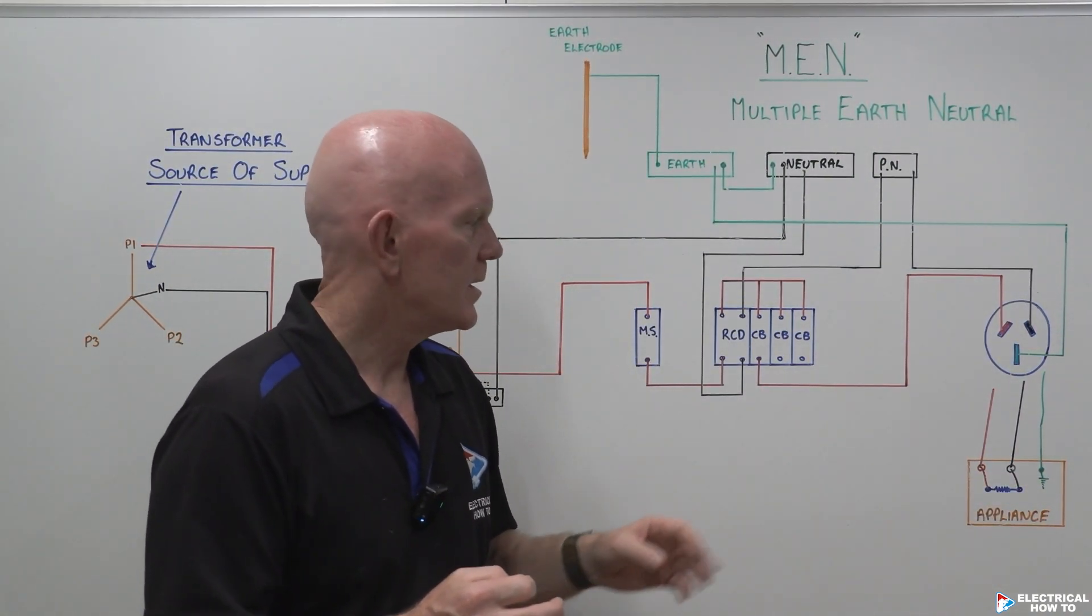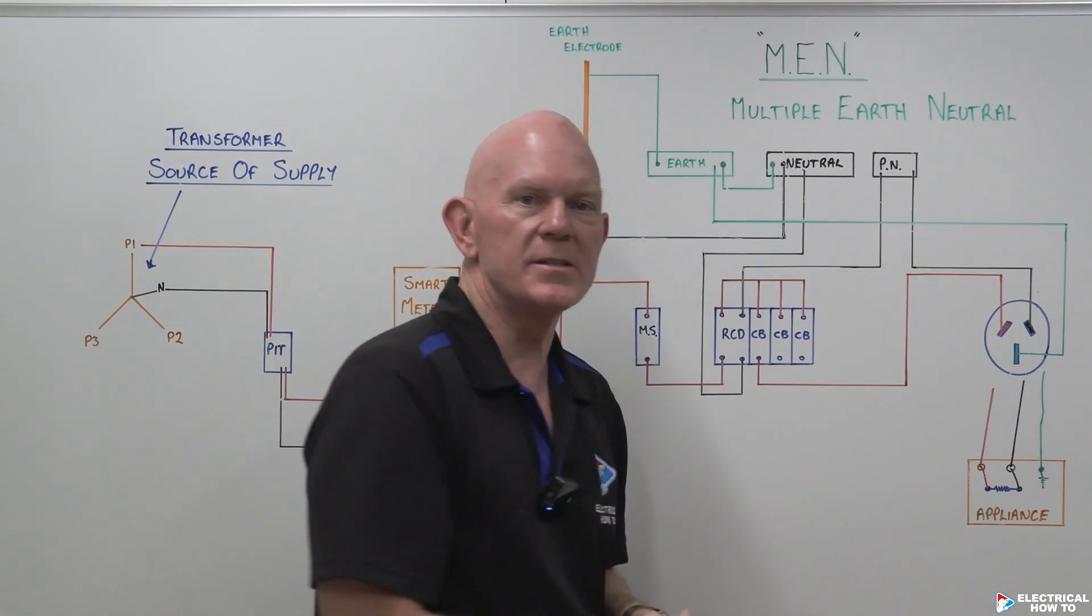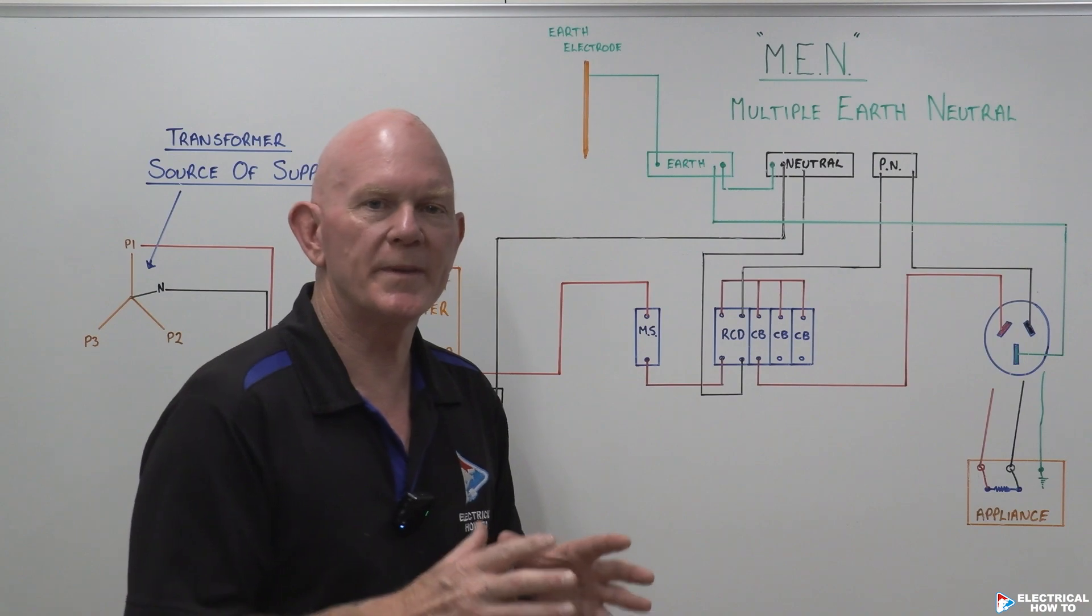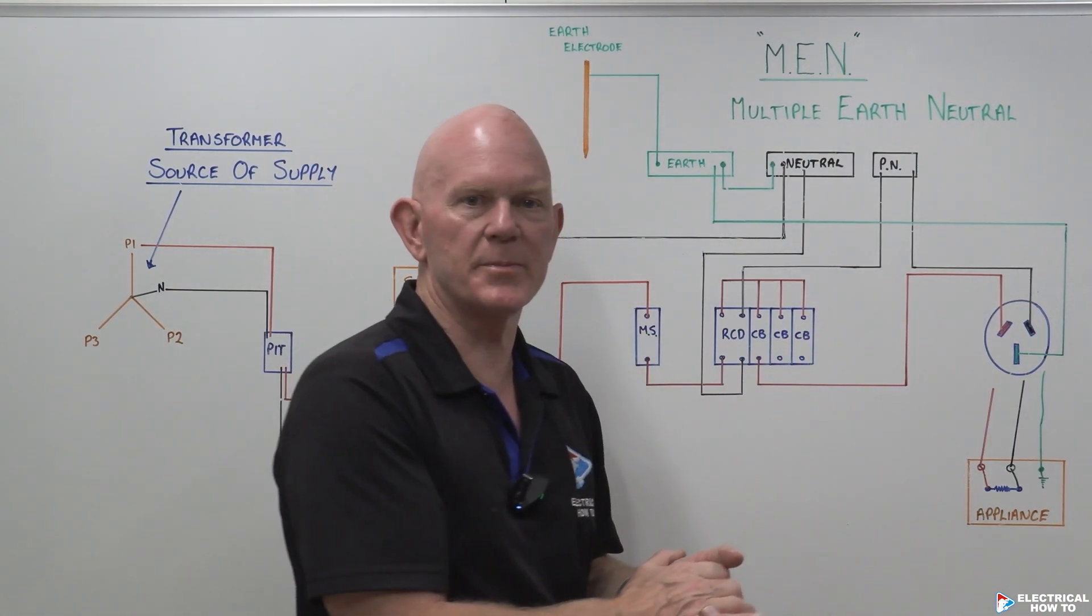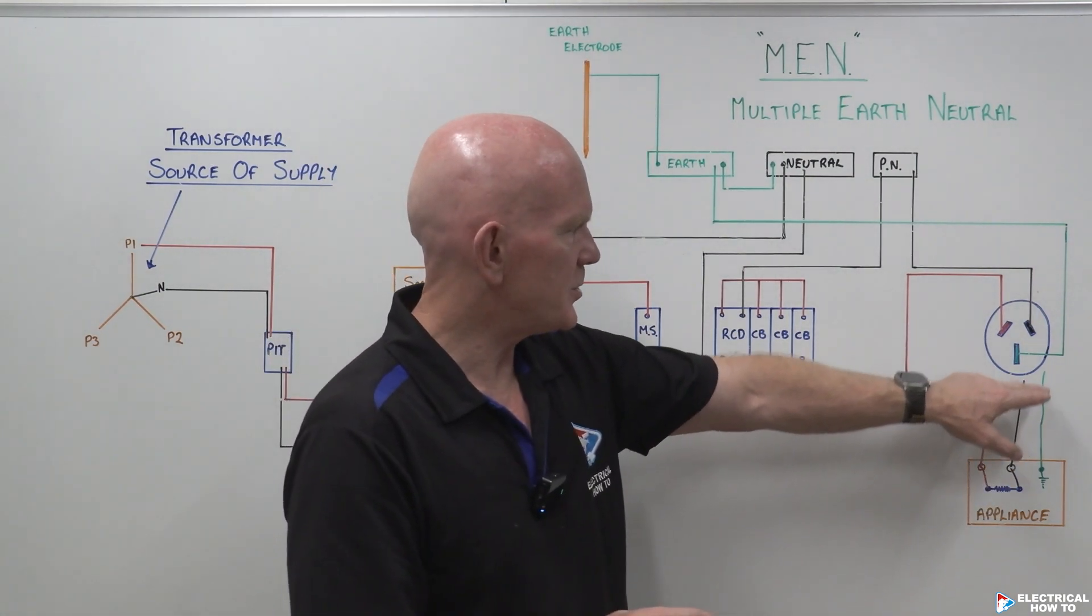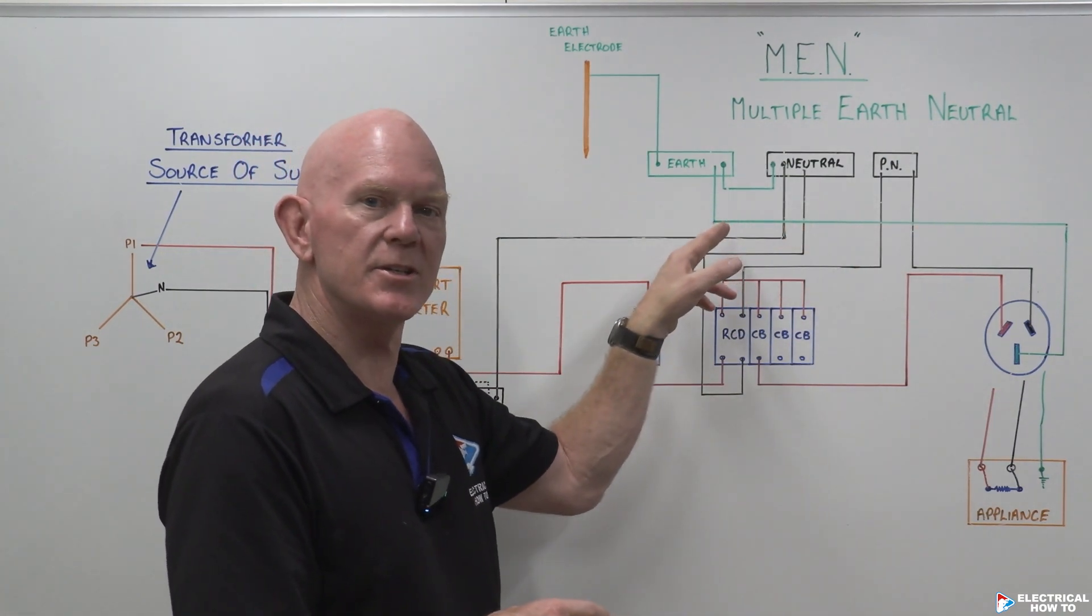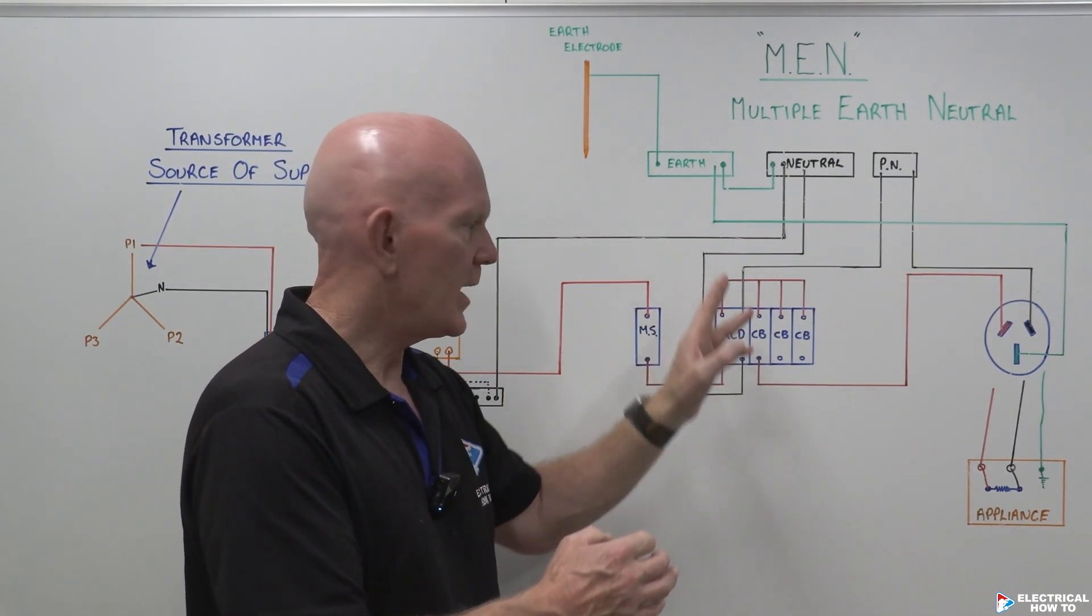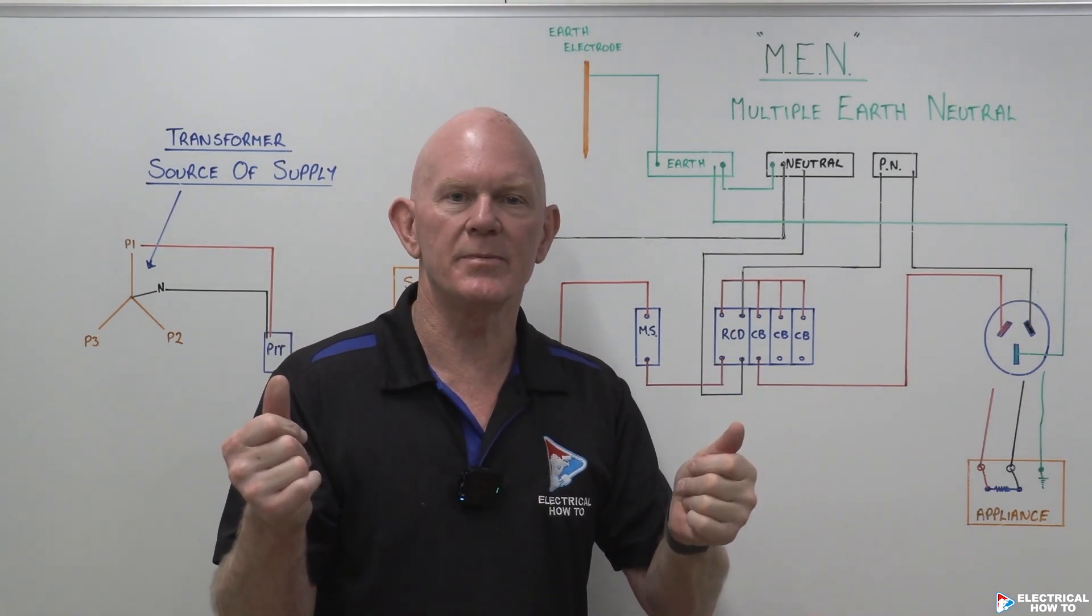The main reason we do this is so that our protective devices can do what they're supposed to do, so we have automatic disconnection of supply. Whether it's a safety switch and the safety switch has detected an imbalance of supply, it's got earth leakage running along the earth wire, it hasn't returned in the neutral, it's an imbalance, it's going to trip off.